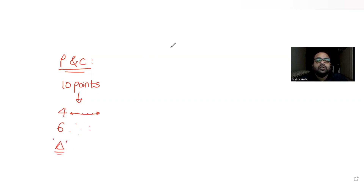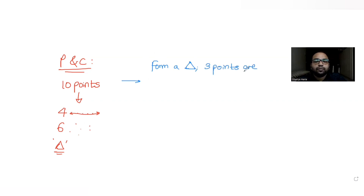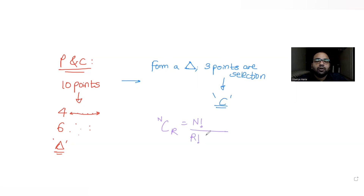To form a triangle, we need to select three points. When we talk about selection, we use combinations. The formula is nCr = n! / (r! × (n−r)!), where n is the total number of options and r is the number of options to be selected. That's the whole idea — n factorial upon r factorial into n minus r factorial.